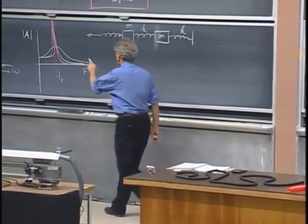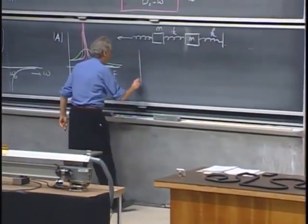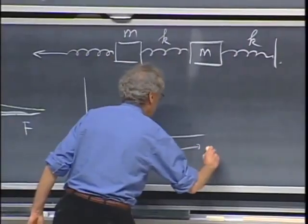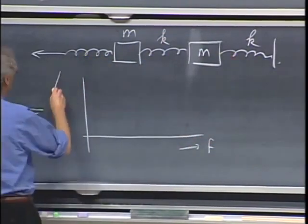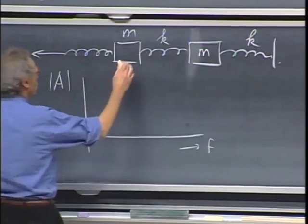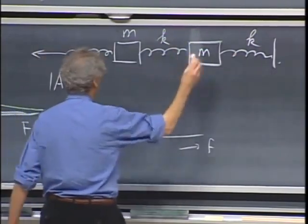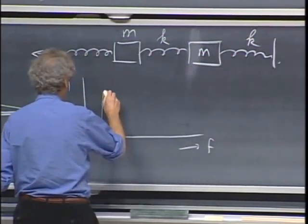And when I make this curve of A, amplitude, as a function of frequency, either hertz or radians per second, whichever you prefer, then if I had three objects there in a row, you would see something like this.